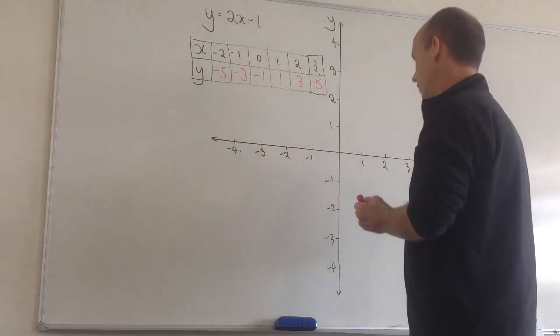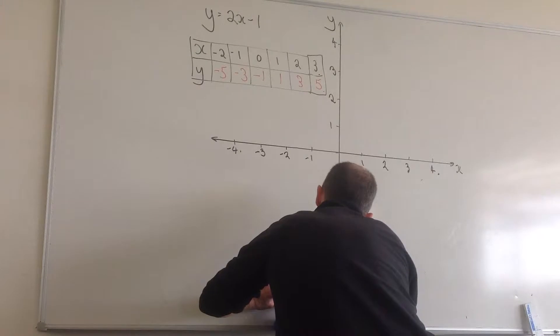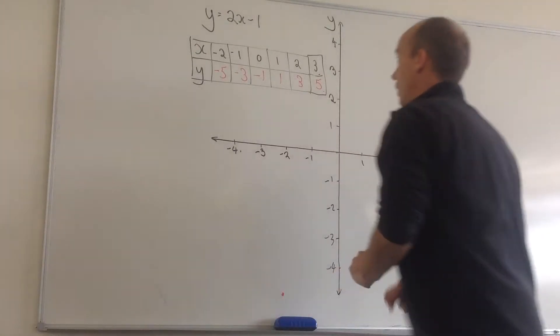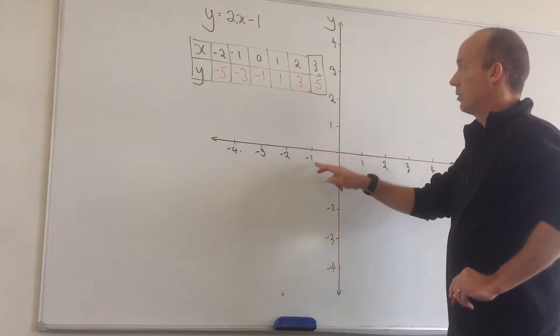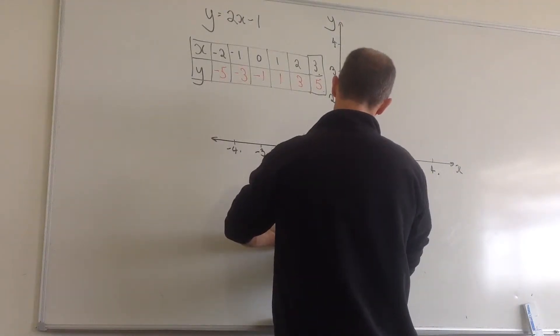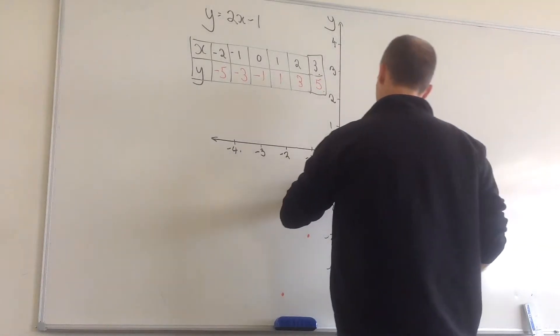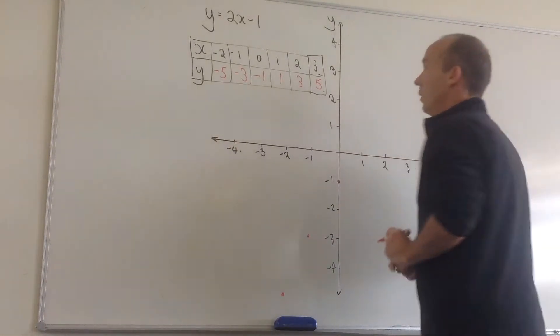So, when x is equal to minus 2, y is equal to minus 5. So that's down here somewhere. When x is equal to minus 1, y is equal to minus 3. I'll put in a point here. When x is equal to 0, y is equal to minus 1.